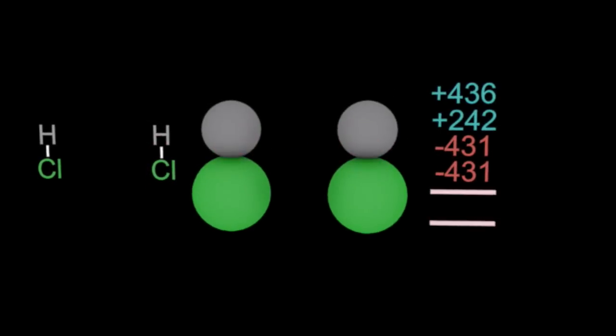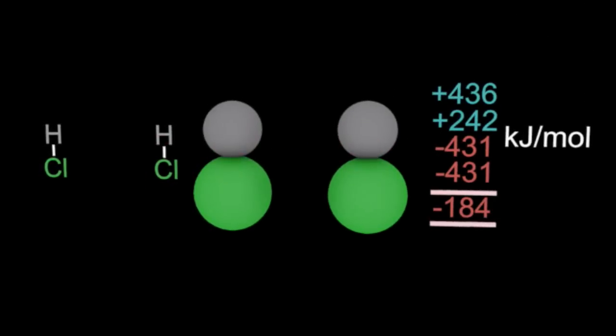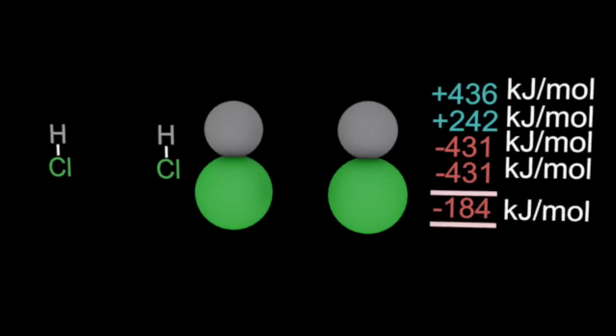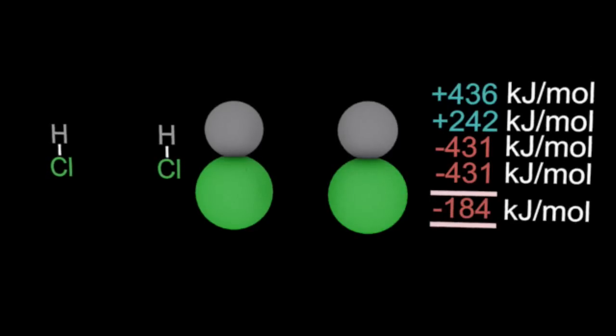And making those bonds, well that's an exothermic process. And you can see overall, the exothermic, the bond making, is of a higher magnitude than the endothermic, the bond breaking. So overall, the reaction is exothermic. Delta H is negative.